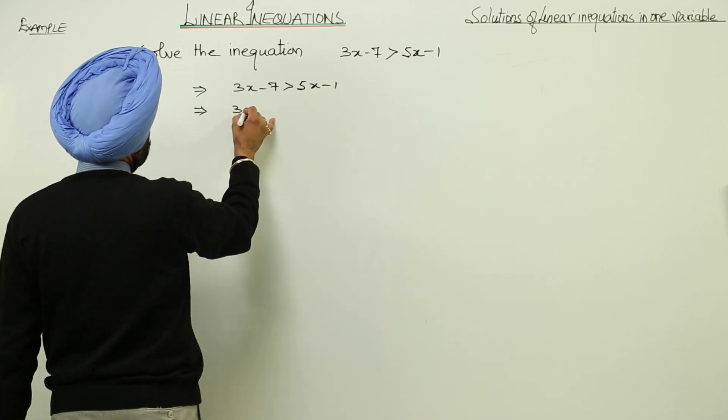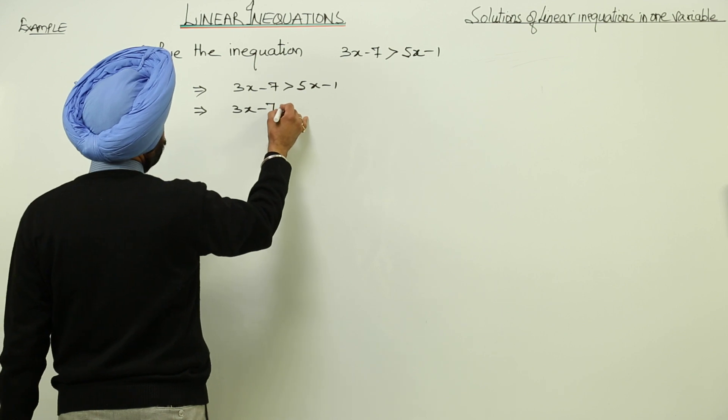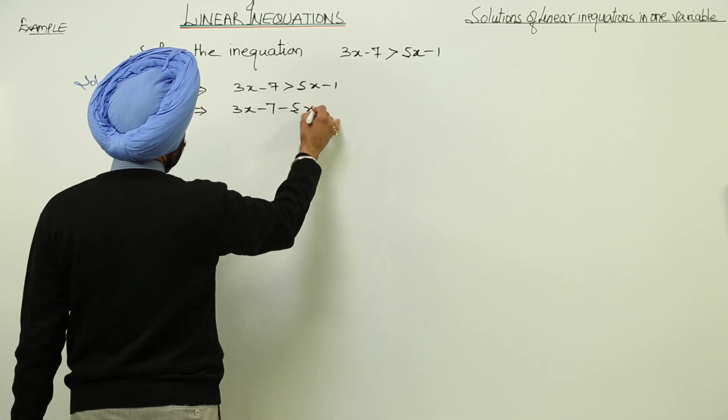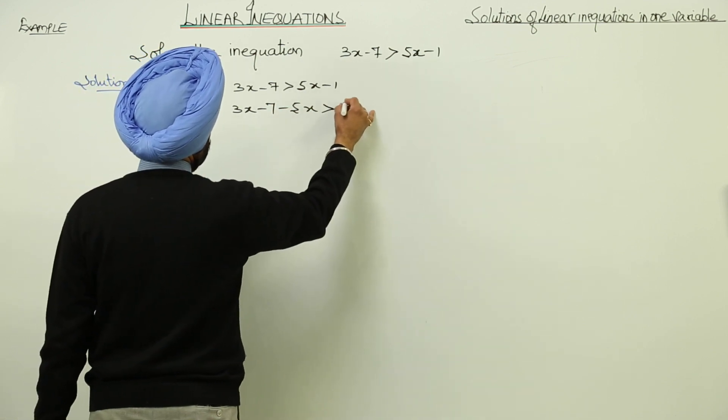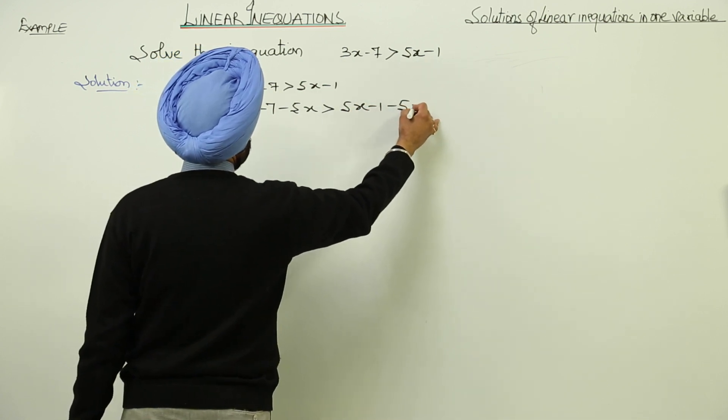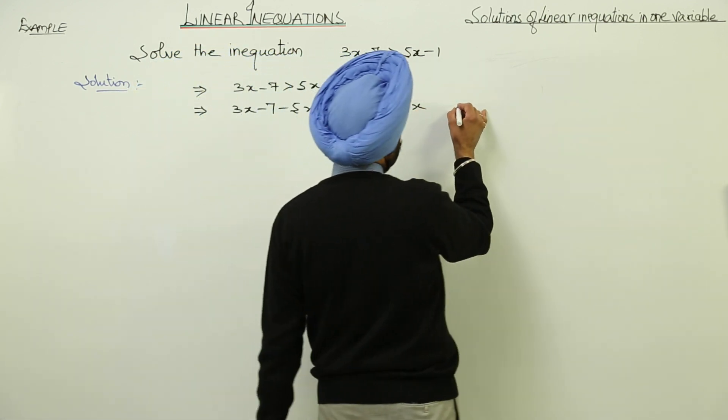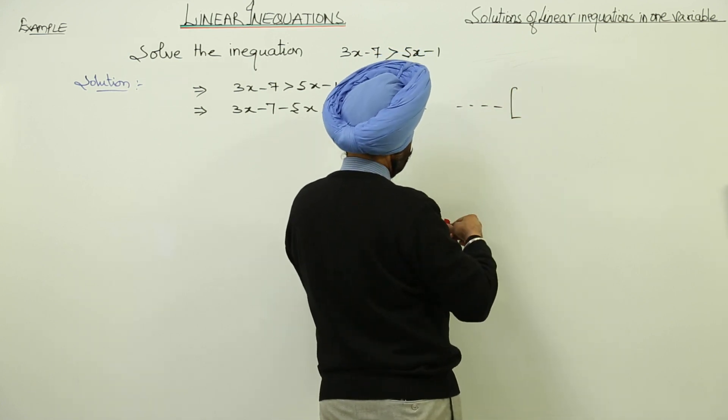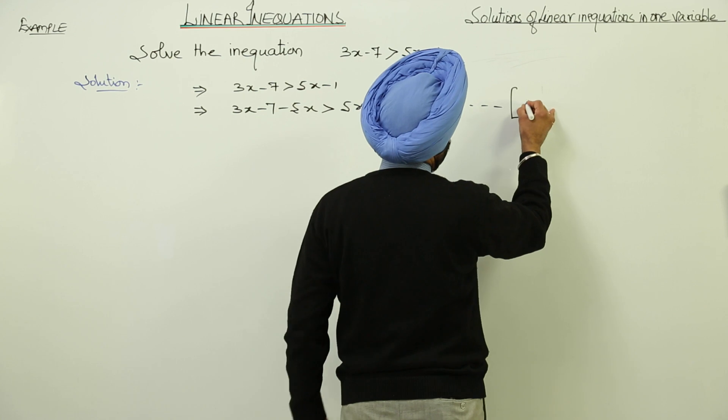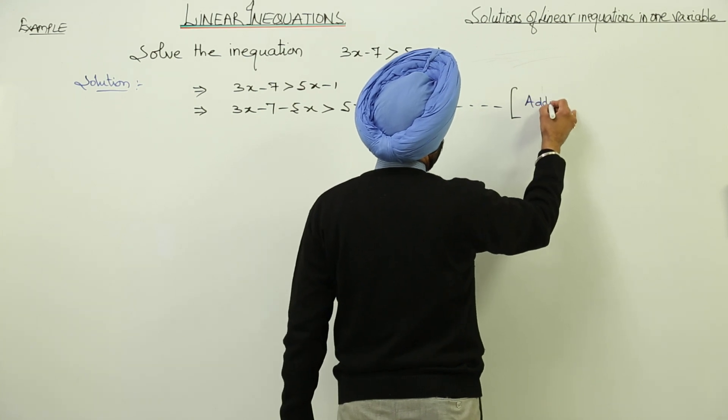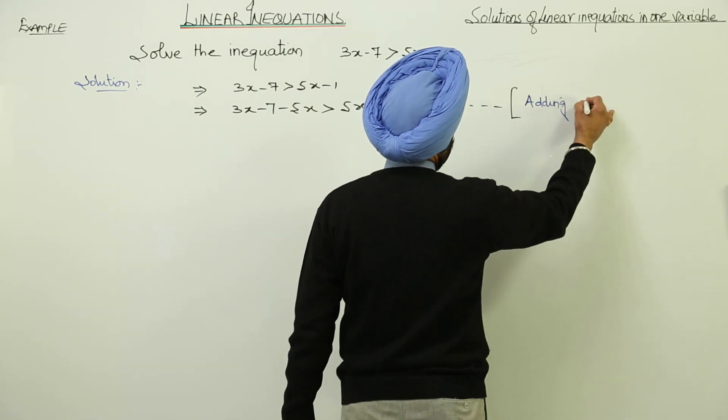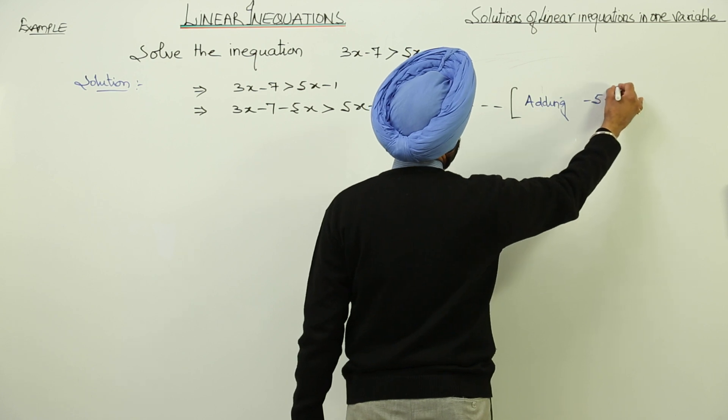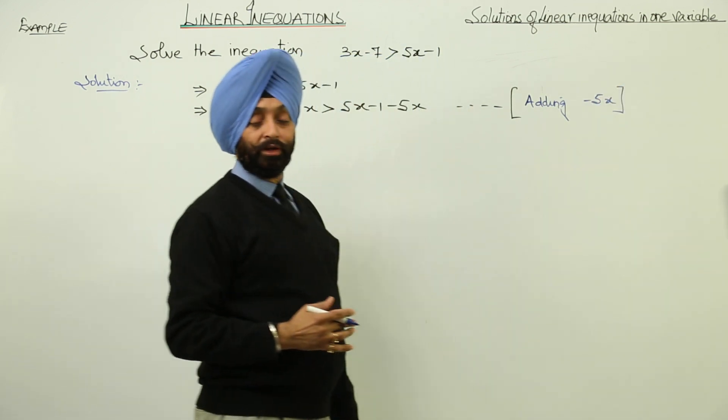Now 3x - 7 - 5x > 5x - 1 - 5x. Adding -5x. This means we have added to both sides.